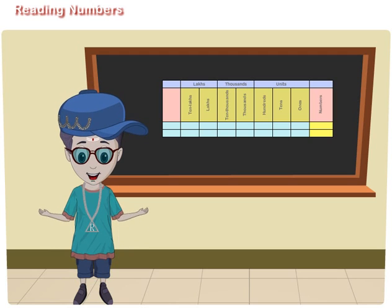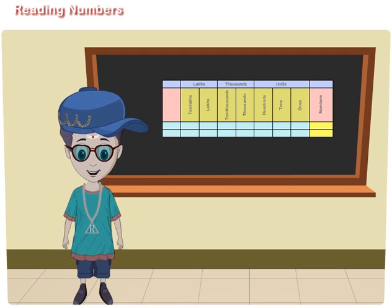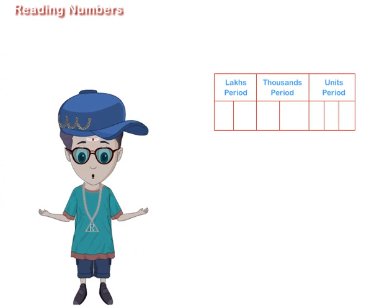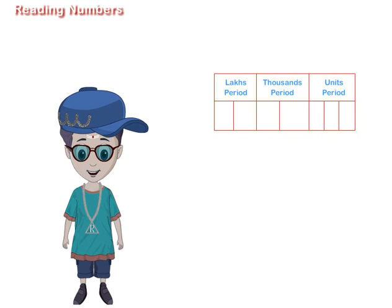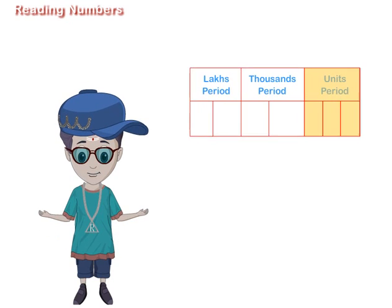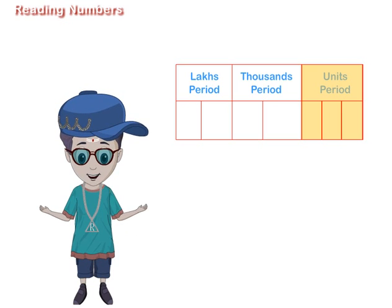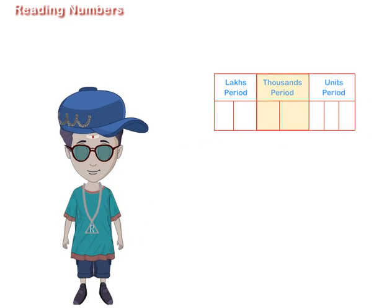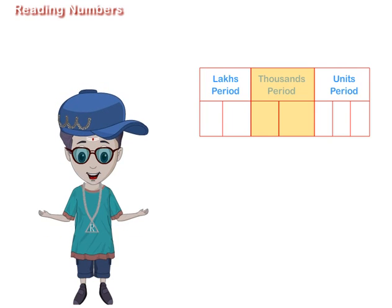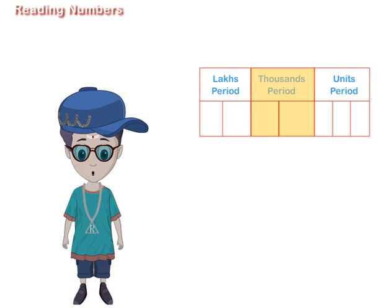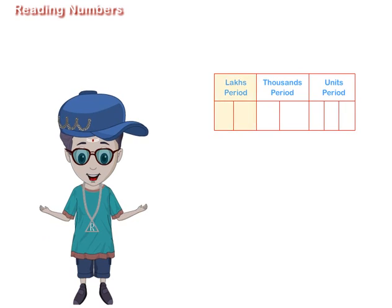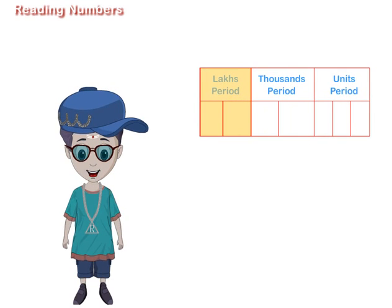Reading of Numbers. Before reading a number, we divide it into periods, starting from the right. The first period consists of three digits, called the units period. The next period consists of two digits, called the thousands period. The next period also consists of two digits, called the lakhs period.